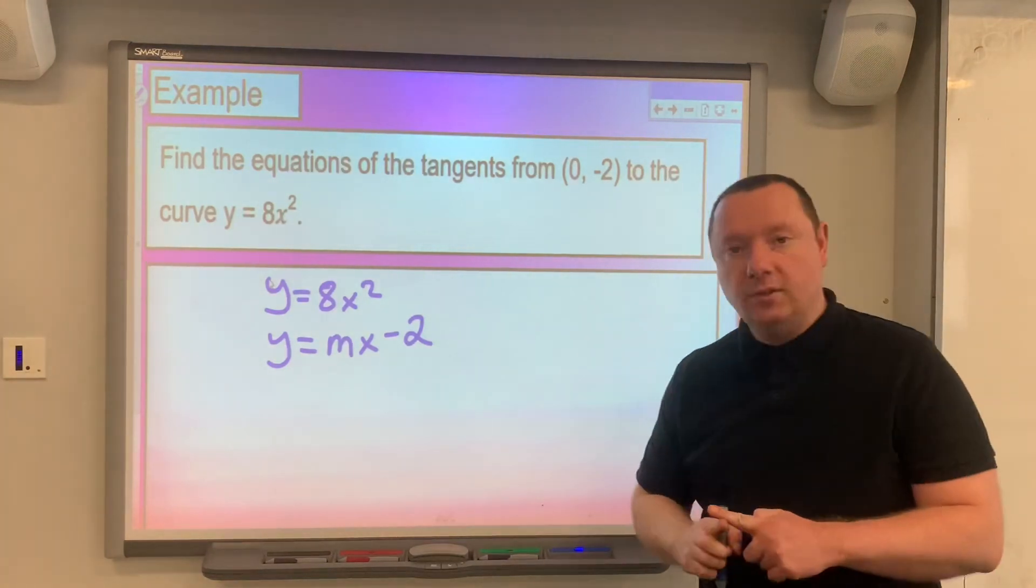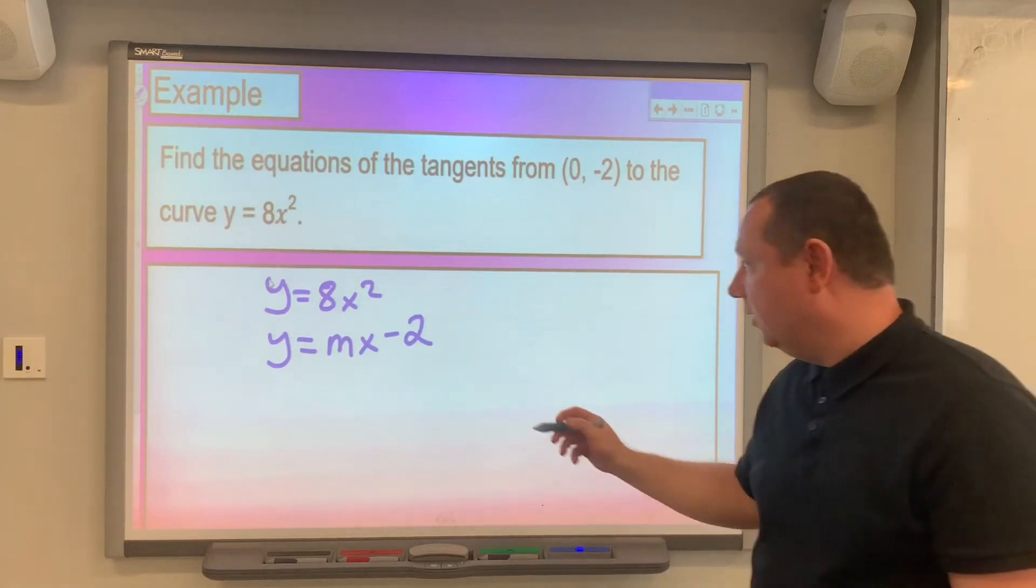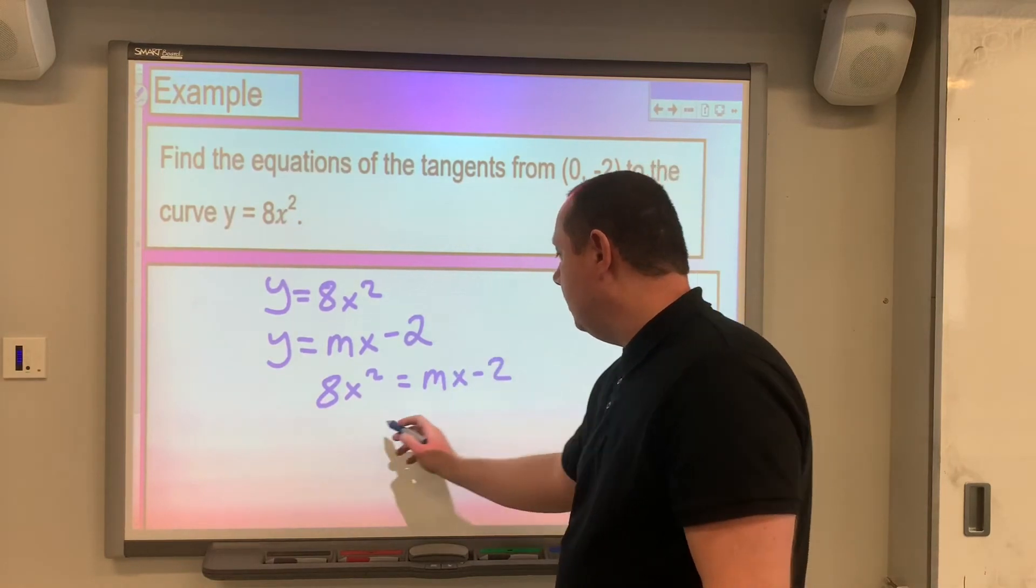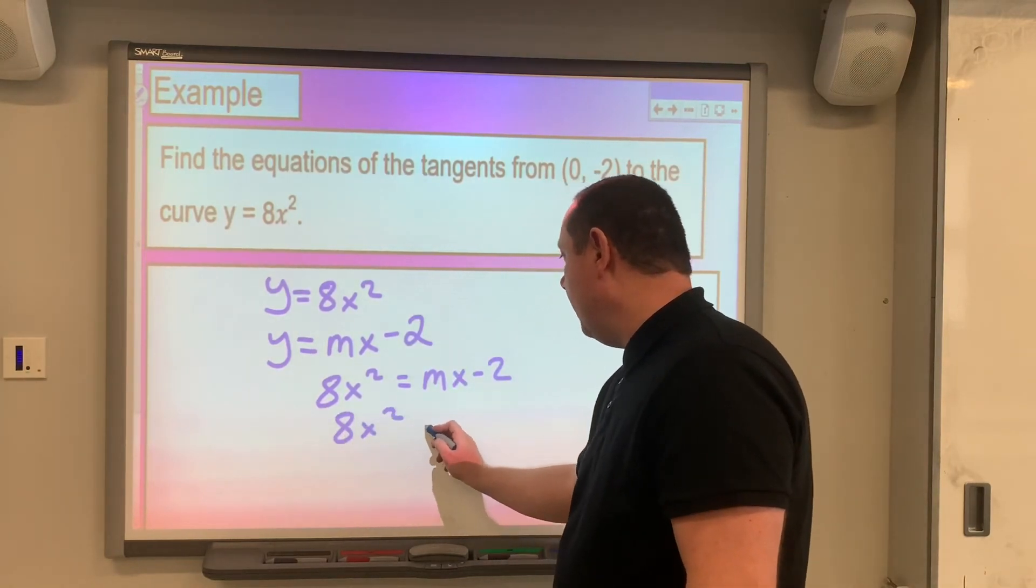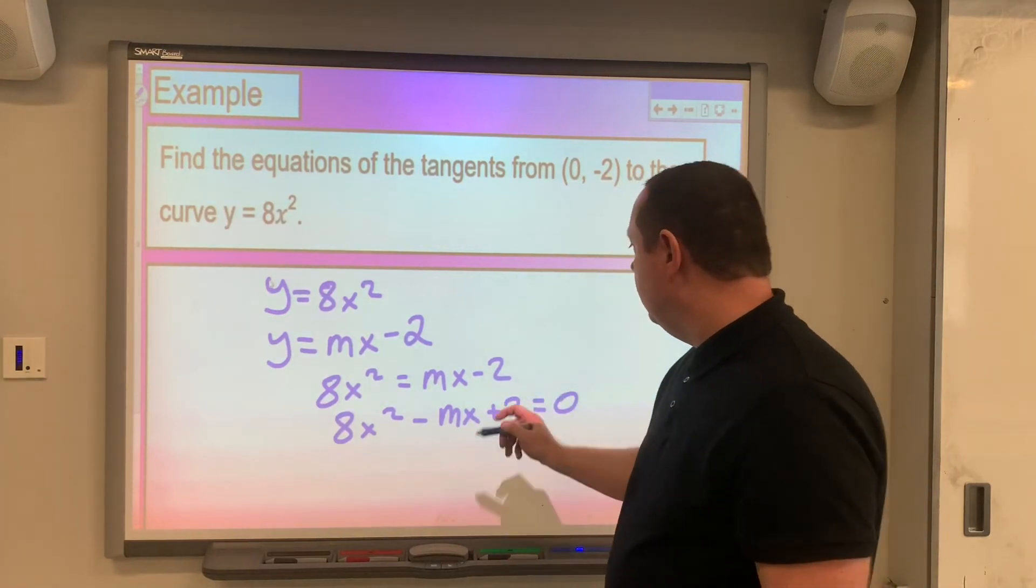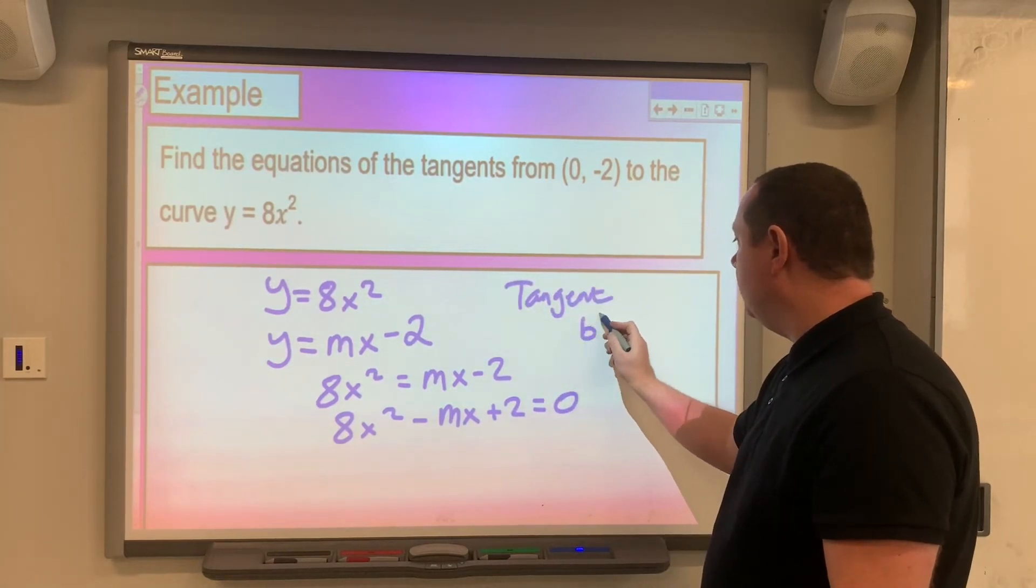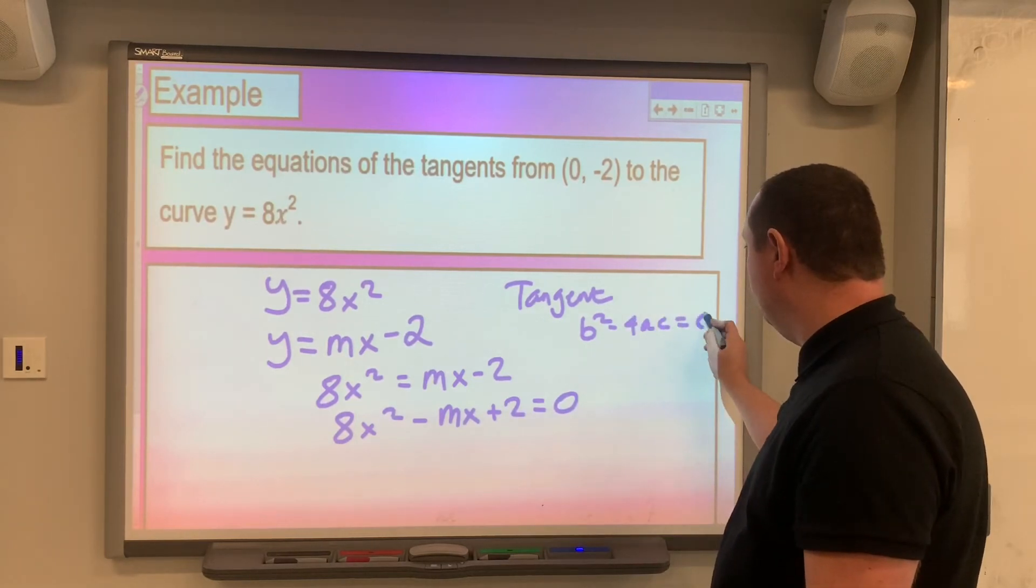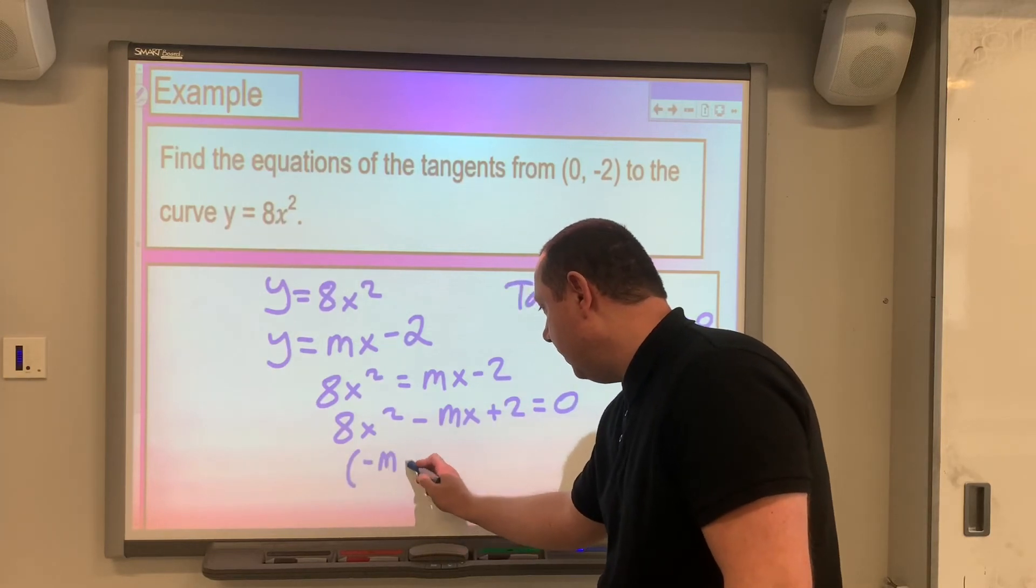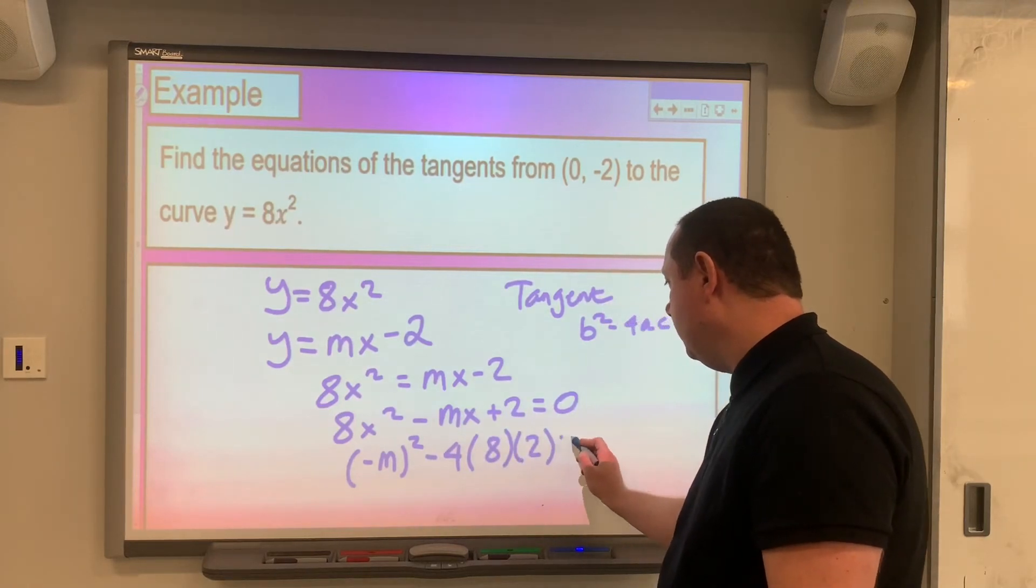Since some tangents will touch with each other, we'll find the point of intersection, so make them equal to each other. So 8x squared equals mx minus 2. So 8x squared minus mx plus 2 equals 0. So remember, tangent means when you find this equation, b squared minus 4ac will be equal to 0. So b is minus m, so minus m squared minus 4 times 8 times 2 equals 0.